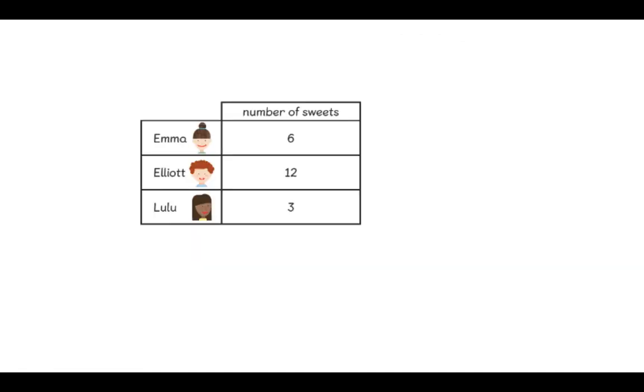Well done, year three. We have used the number of sweets Emma had to work out how many Elliot took and how many Lulu took. Our final step is for us to work out how many sweets they took all together. Pause the video and see if you can write down how many sweets they took all together. Did you manage to find the total number of sweets the children took? Great job. Let's look together. We need to add the three amounts. We can add six and twelve, which makes eighteen. And then we can take eighteen and add three more. So all together, we know the children took twenty-one sweets. Well done, year three. That was a tricky problem and there were lots of different steps we had to do. But we worked through it together and we got there in the end.